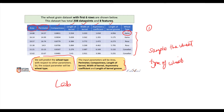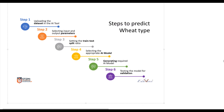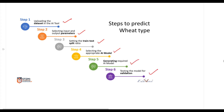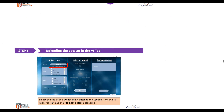Let's go ahead and start working on this lab with the dataset we have. From the previous lab, there are six steps: first, upload the dataset; second, select input and output parameters; third, split the test and train ratio; fourth, select the AI algorithm; fifth, generate the model; and sixth, test and evaluate the model results.